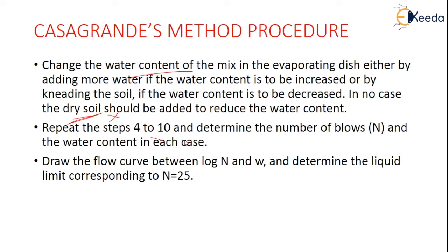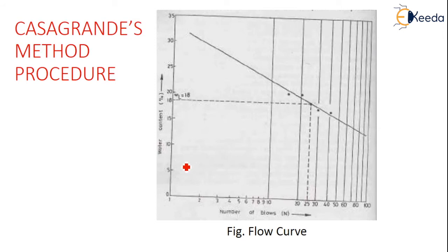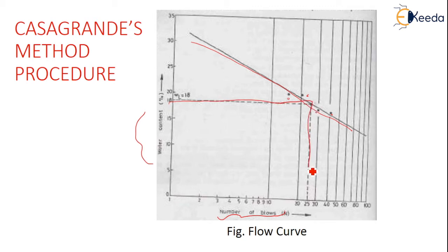Repeat these steps 4 to 10 times and determine the water content in each case. Then draw a flow curve between log N and water content W, and determine the liquid limit corresponding to the number of blows equal to 25. From the different experimental values, correlate to the 25th blow to get the required liquid limit value.